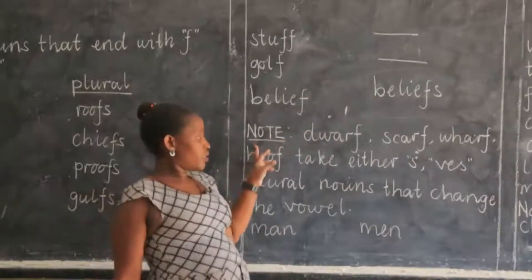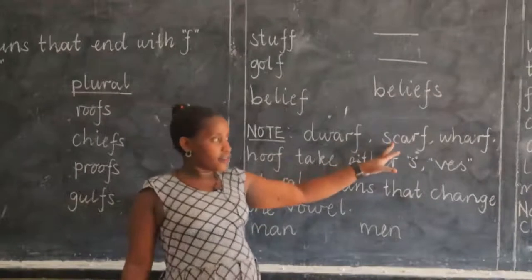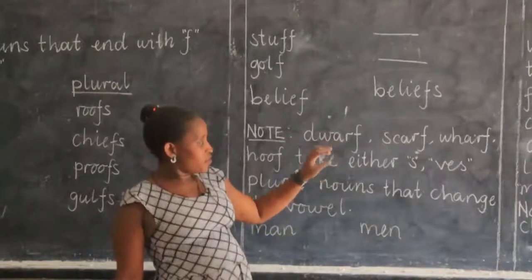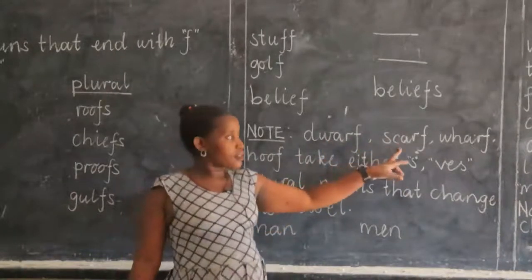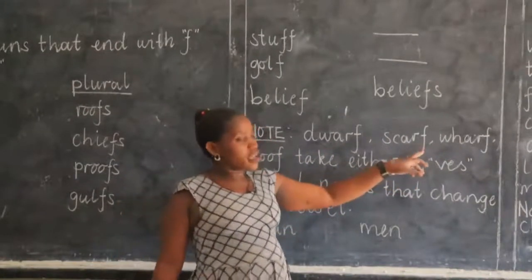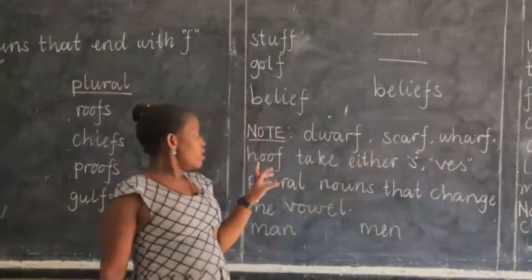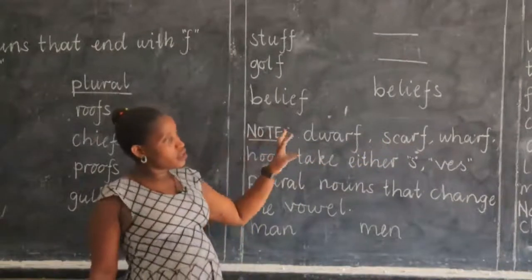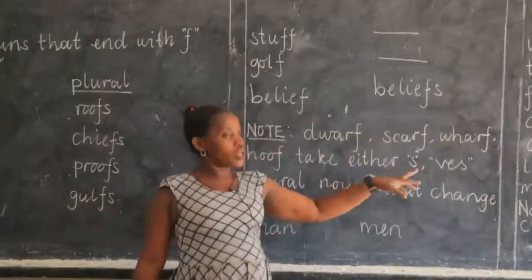But here we have a note. The words dwarf, scarf, wharf, and hoof are very interesting. You can either just add S — saying dwarfs, scarfs, wharfs, hoofs — or you can change F to V and say dwarves, scarves, wharves, hooves. These ones, whatever side you take, it is right. That is why I put a note on them: when you find them, you can either add S or change F to V.